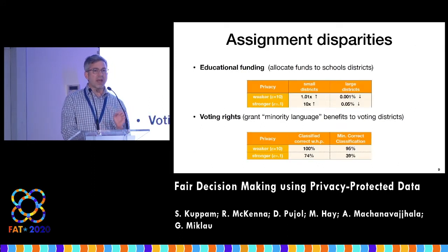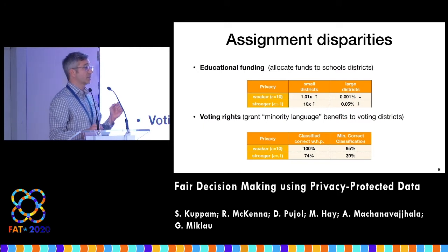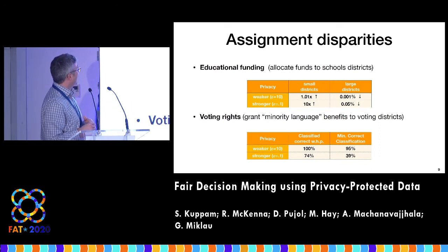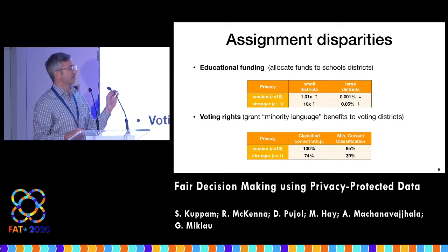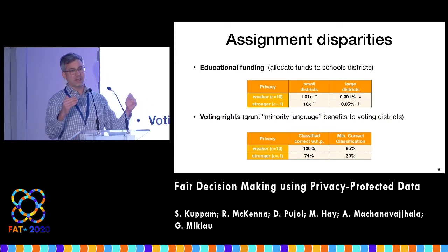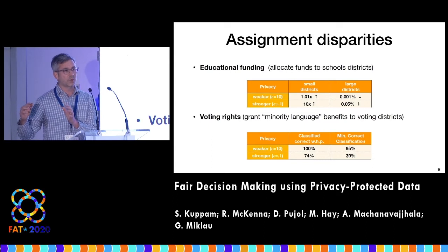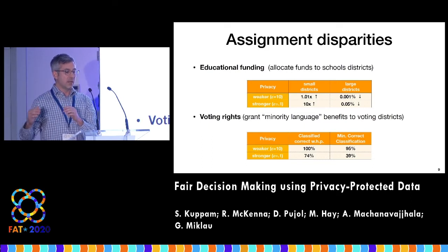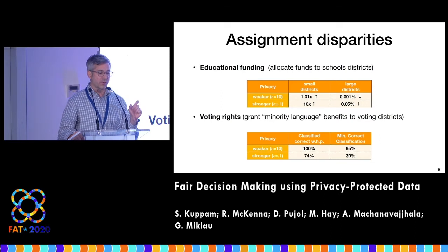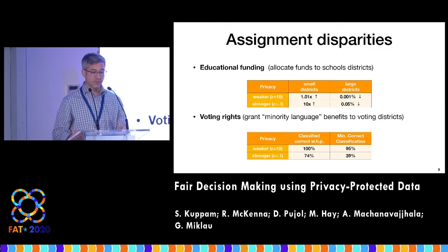To highlight what we found: significant disparities can arise, particularly when the privacy guarantee is stronger and more noise is added. In the educational funding case, one effect we found is that smaller districts tend to get an inflated allocation of funds, which is compensated by larger districts getting taxed a little bit. These effects can be very small if the privacy parameter is high (meaning less privacy), but they can be very dramatic with stronger privacy.